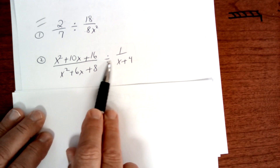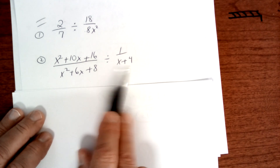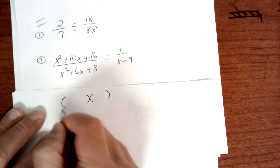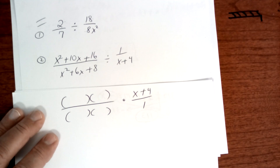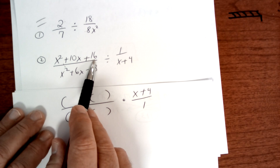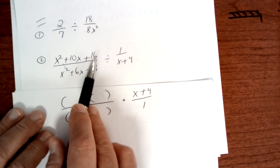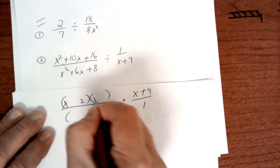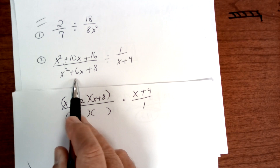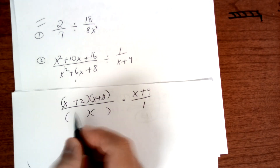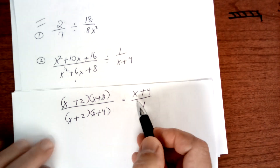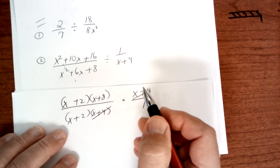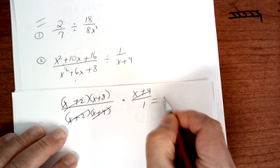First, recognize it's division and flip the second fraction. Factor the top: 2 times 8 is 16 and adds to give 10, so it factors as (x + 2)(x + 8). Factor the bottom similarly: 2 times 4. Now that you've flipped it, reduce — this cancels with this, and this cancels with this. Your final answer is (x + 8).